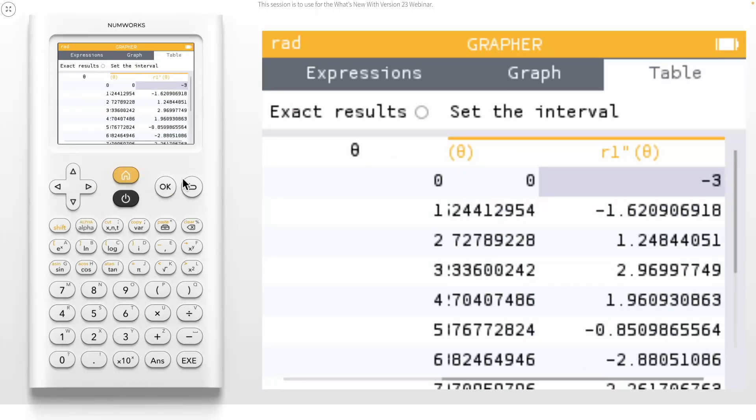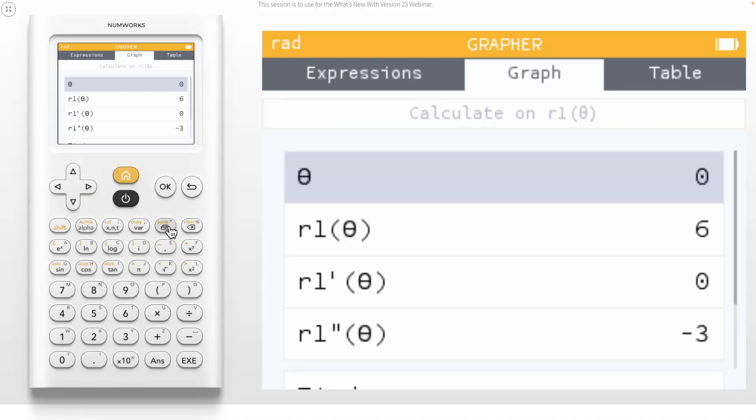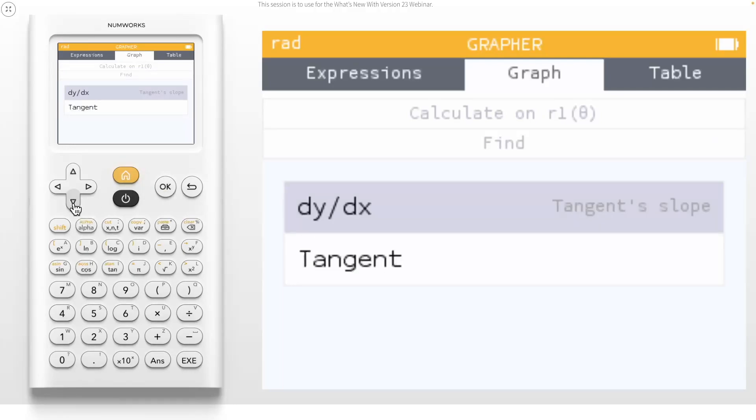Let's go back to the graph of your function and look at even more new derivative features in the calculate menu. You can quickly access this using your toolbox. We've added a find menu to polar. We have added two new features to the find menu. You can now view the value of dy dx of your function or add a dynamic tangent line to your graph.